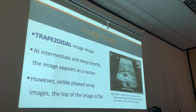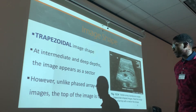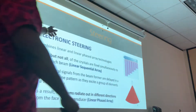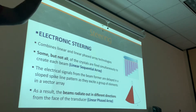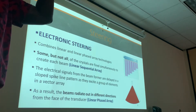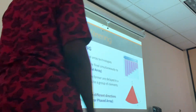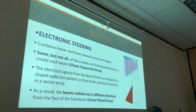However, unlike phased array, the top of the image is flat. Remember, our phased array transducer — how does that image appear? Sector, meaning it comes to a point at the top, like a triangle. Our linear phased array, I hope you guys know the difference between linear phased array versus linear sequential or linear switch array transducer. It does have electronic steering as well. The vector array is a blend of linear sequential and linear phase array.